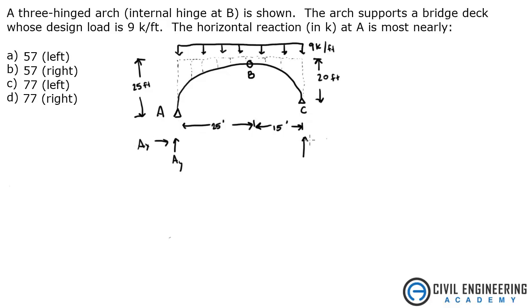At C, we also know we've got the same thing. So I'll draw it like this. We've got CX. We've got CY. And we've got this internal hinge at B, which means you've got an X and a Y and no moment happening here. And we've got the load of nine kips per foot on top.